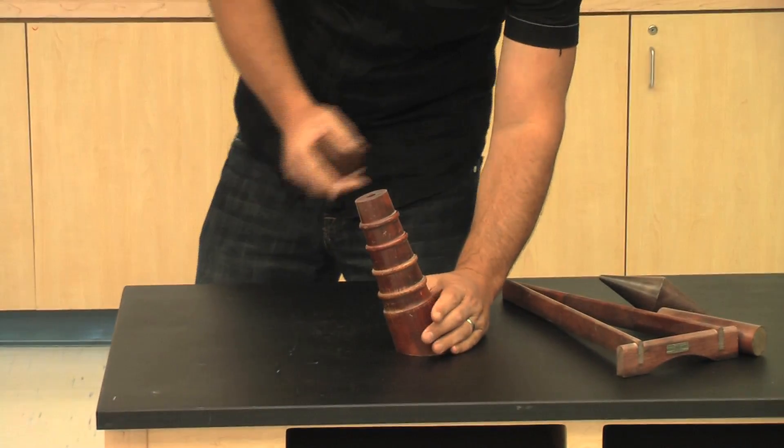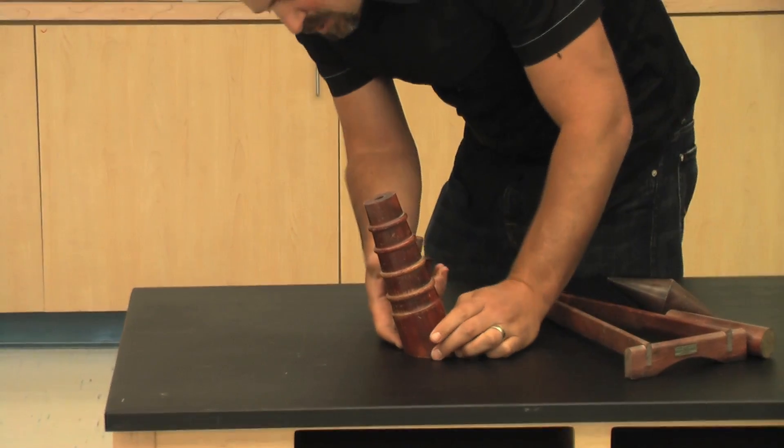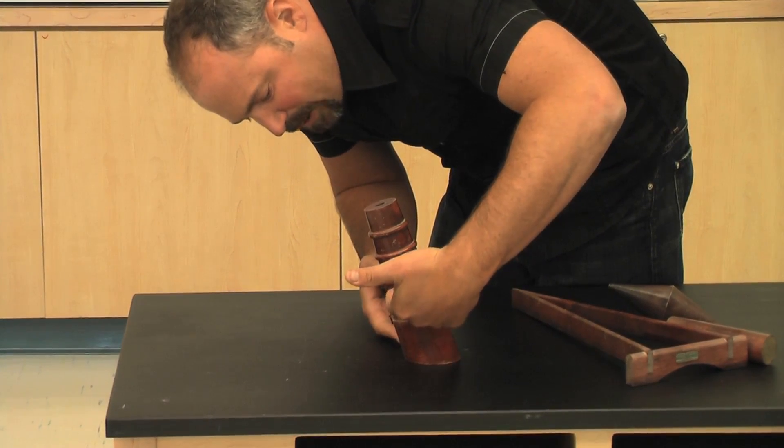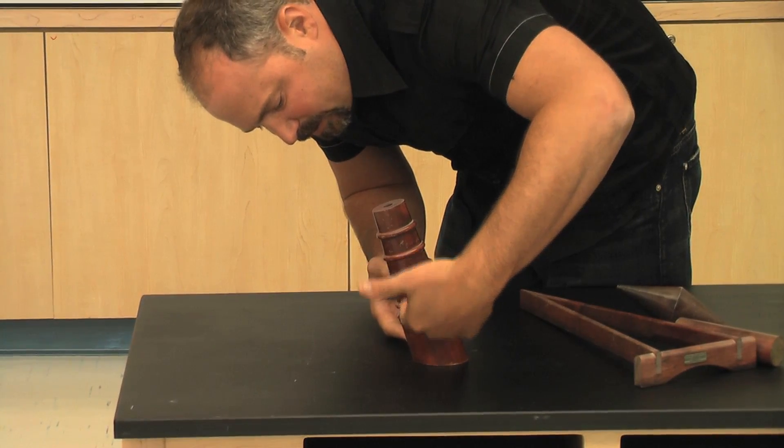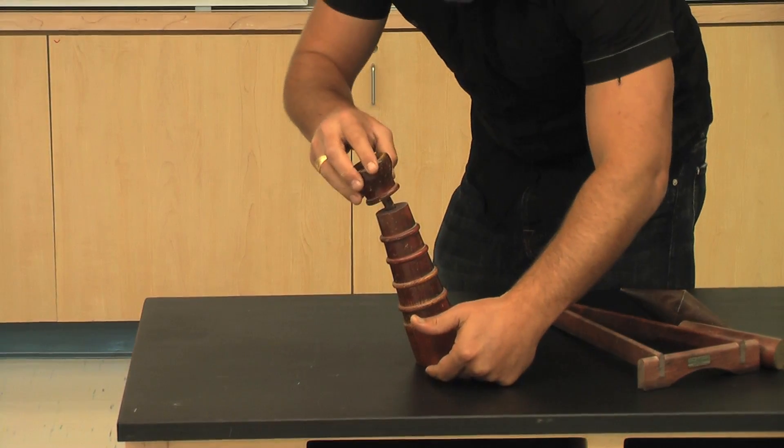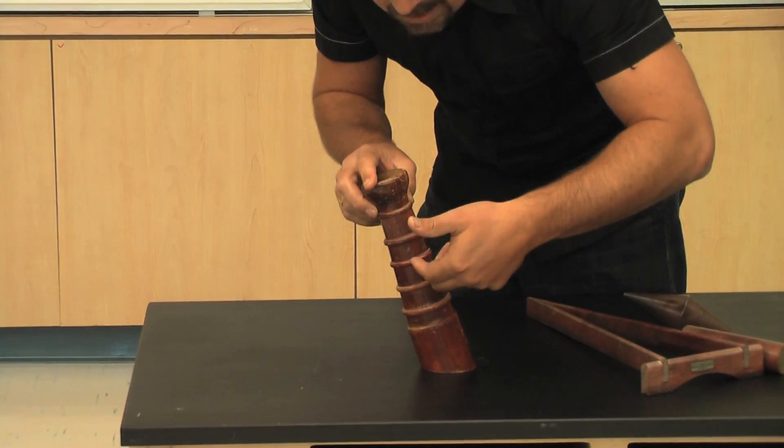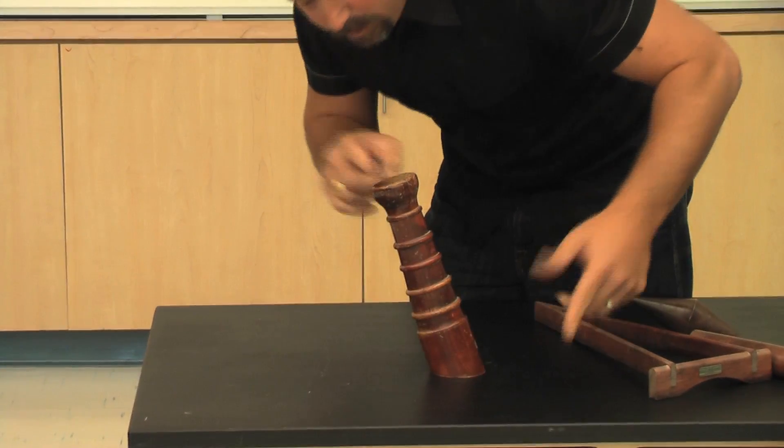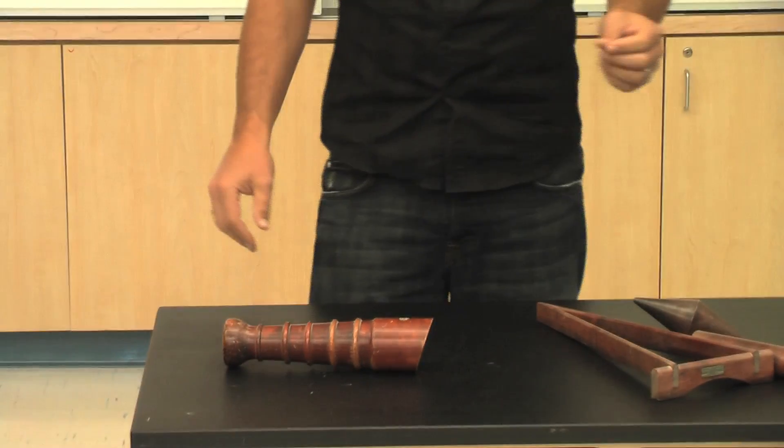Well, right now, the center of mass is being supported by the base. So the center of mass is probably somewhere around here, and it comes straight down, it's being supported. But when I add some more mass on top, that raises the center of mass, and now it's no longer being supported, and so it falls over.